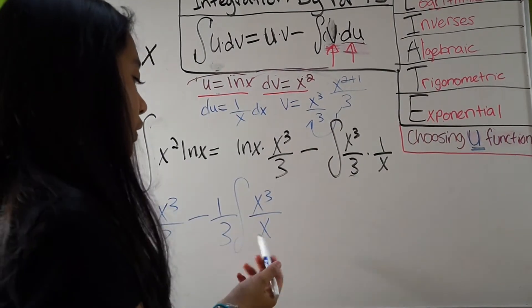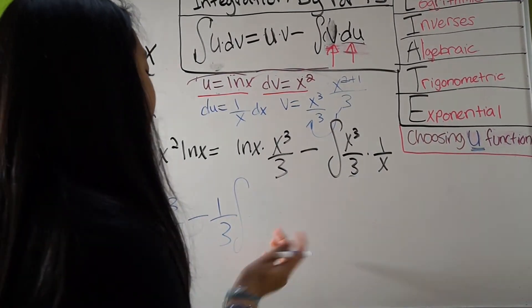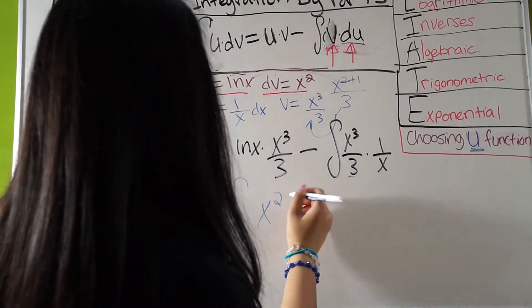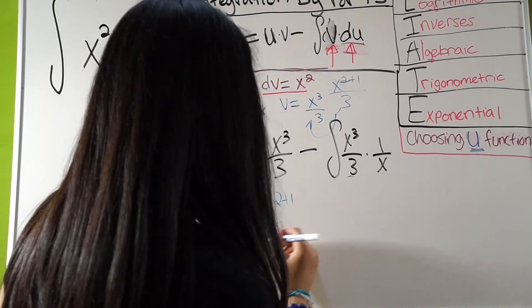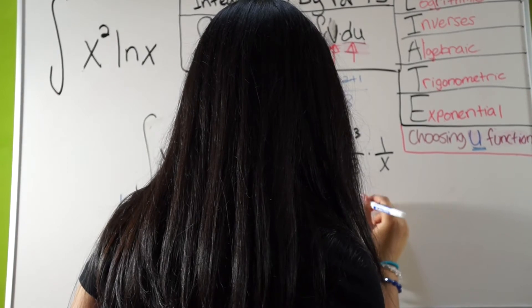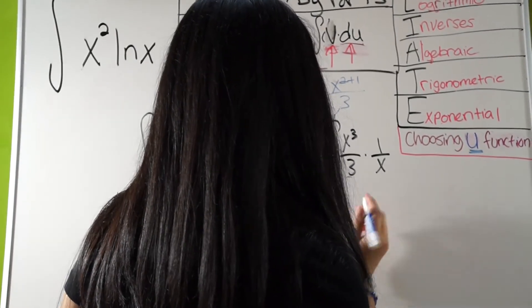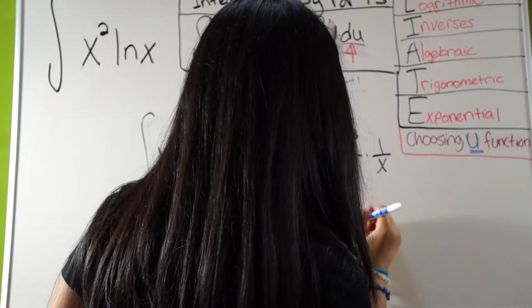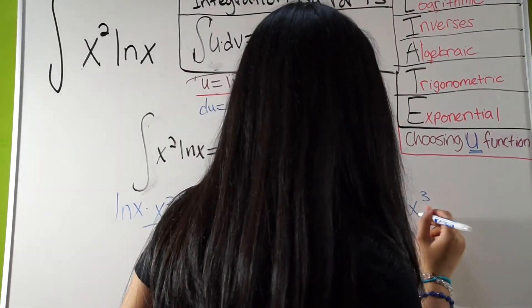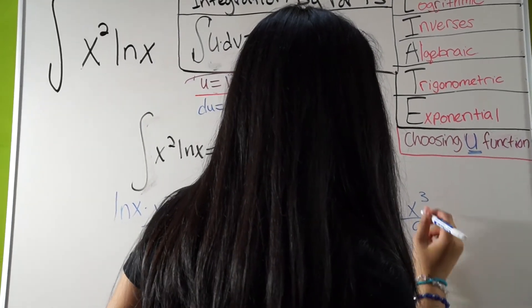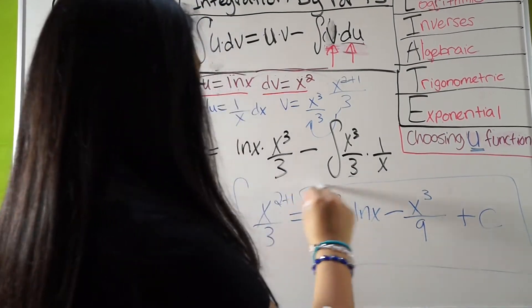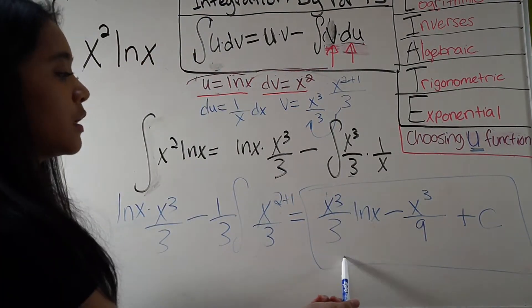So, we know you have x cubed all over x. So, you can change it. Well, you divide the x, so it's just x squared. And now, you can integrate. So, x squared plus 1 all over 3. So, then this equals ln x, you can rewrite it and say x cubed ln x over 3, minus x cubed all over 9 plus C. Better have this little constant thing here. And so, this is the integral of this.